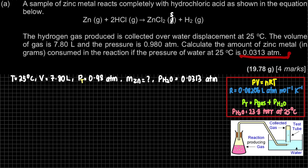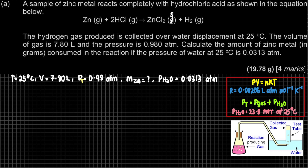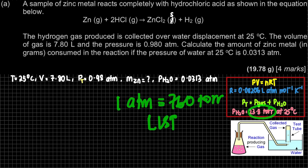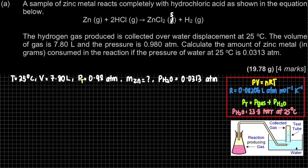If the pressure of water is not given in atm, you need to convert from torr to atm using 1 atm = 760 torr. You don't have to memorize this — it's on the list of constants. In this question, however, P_H₂O has already been converted and given to us in atm, so no conversion is needed.